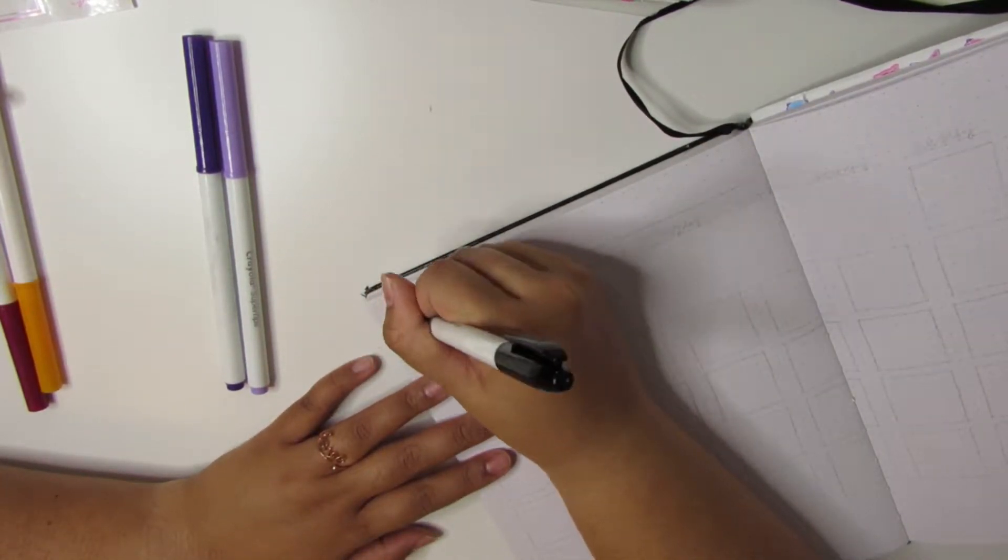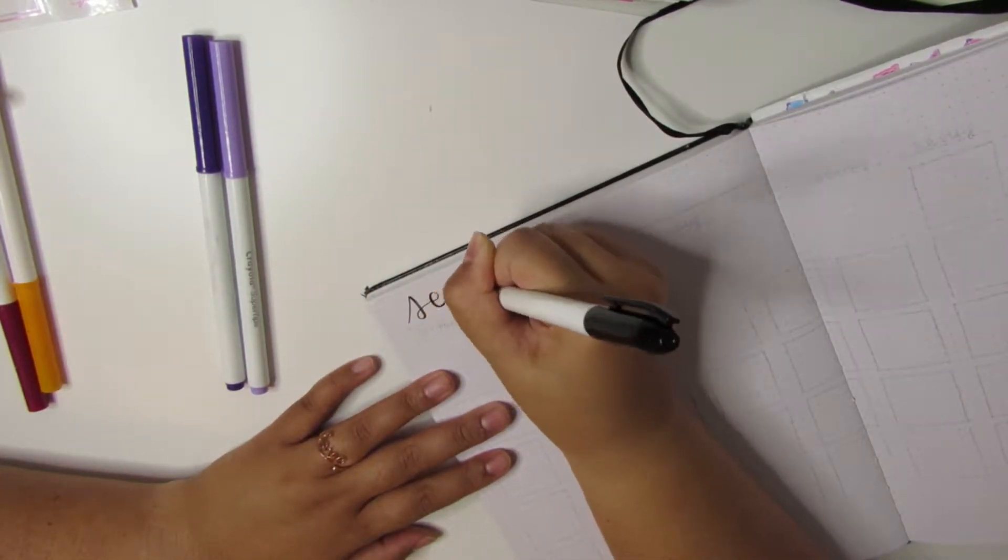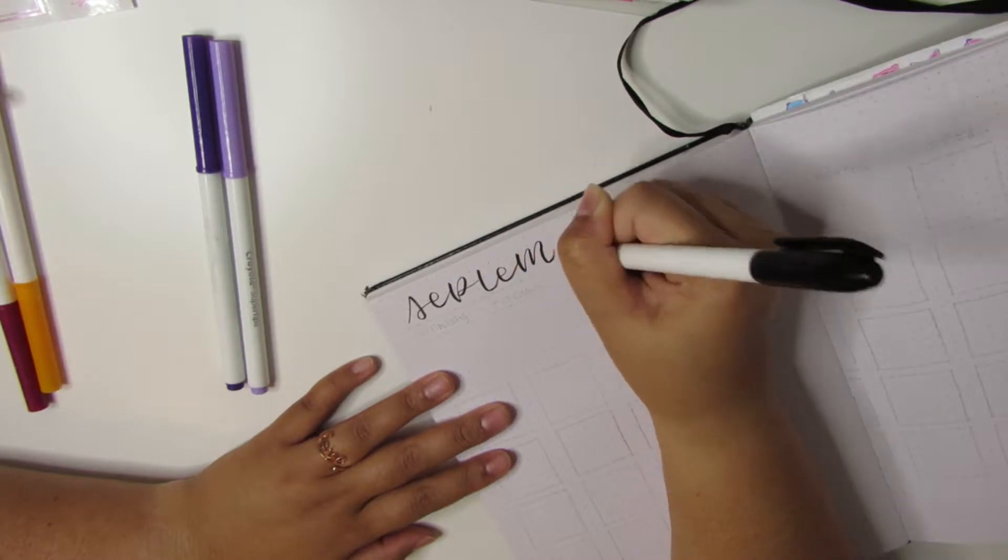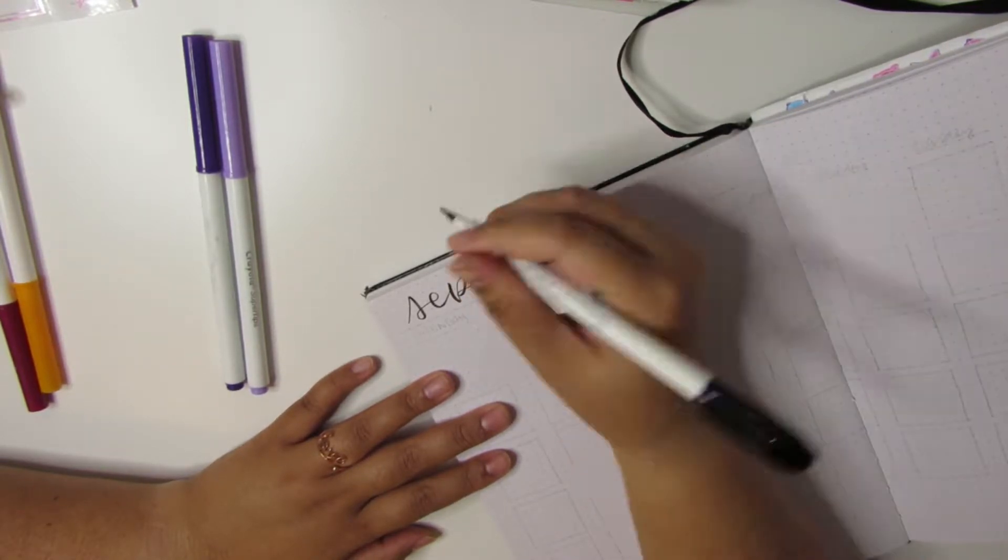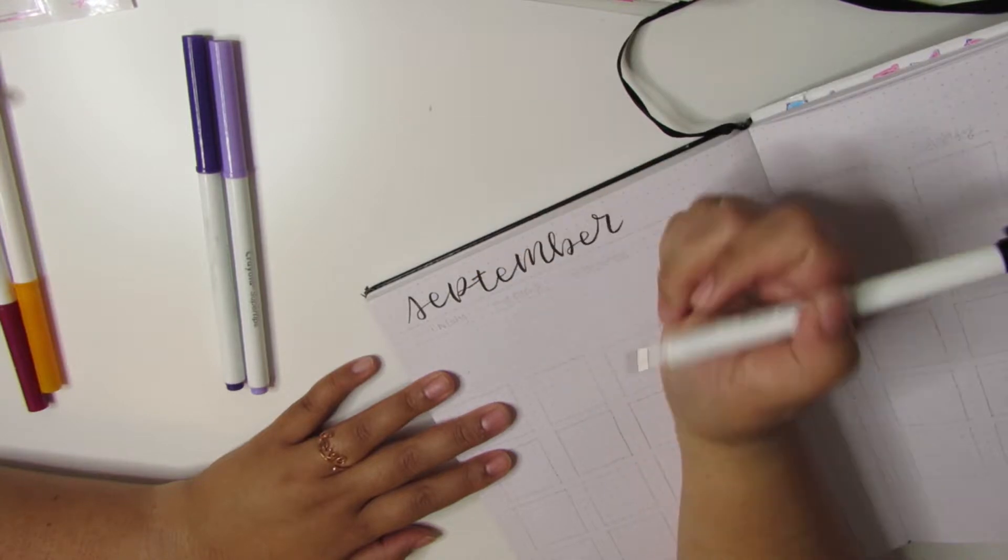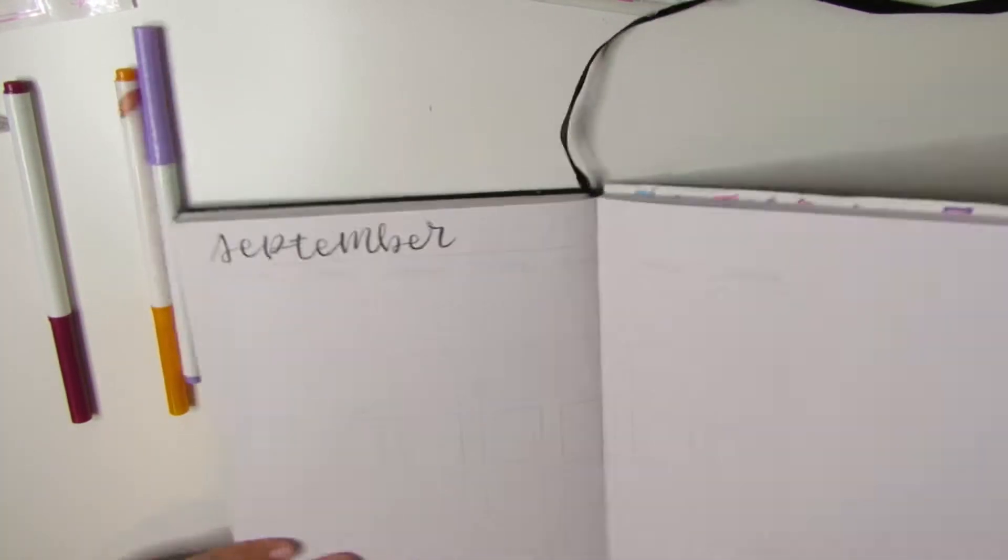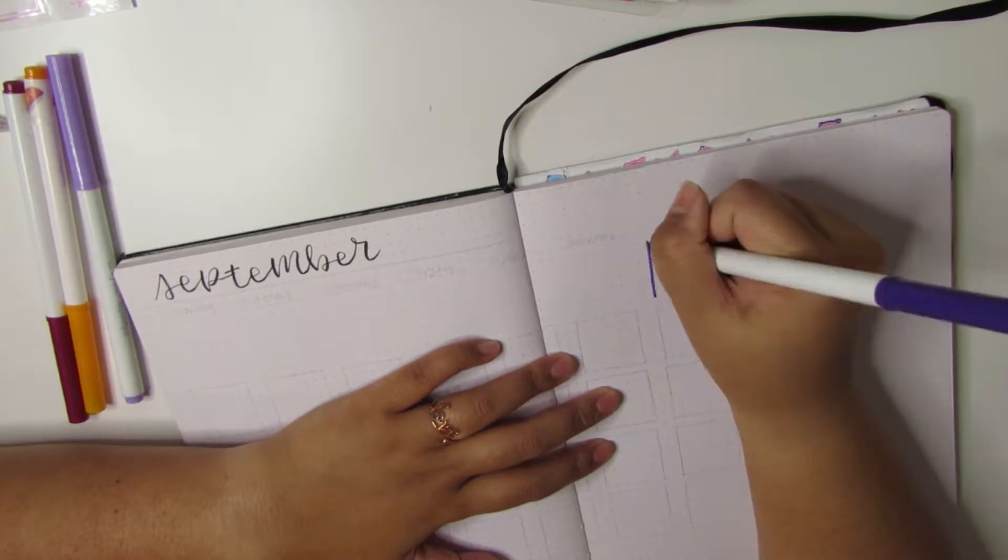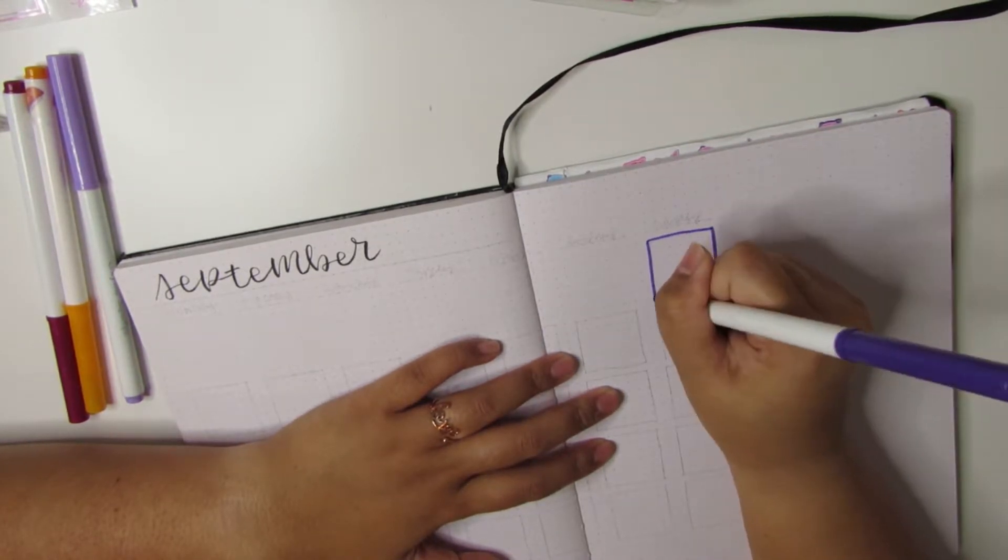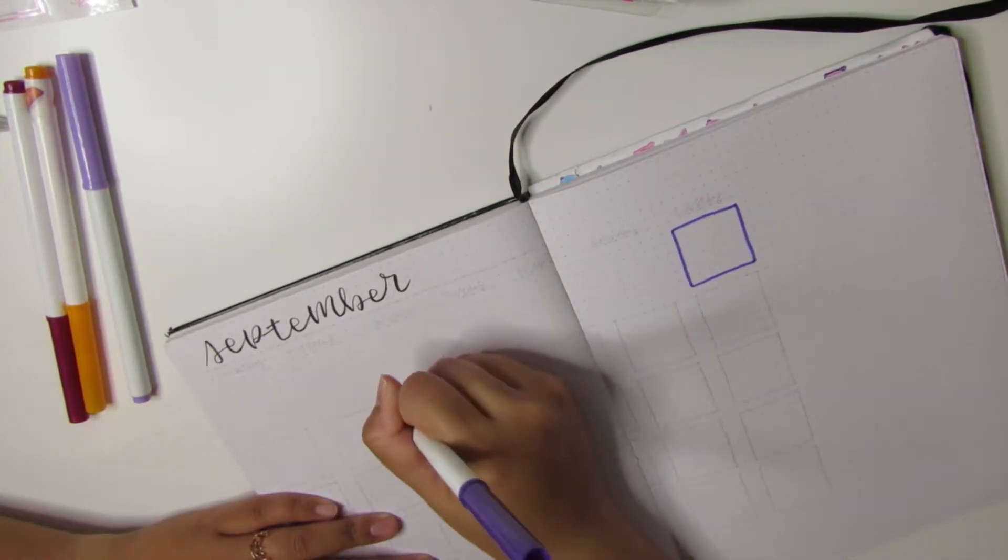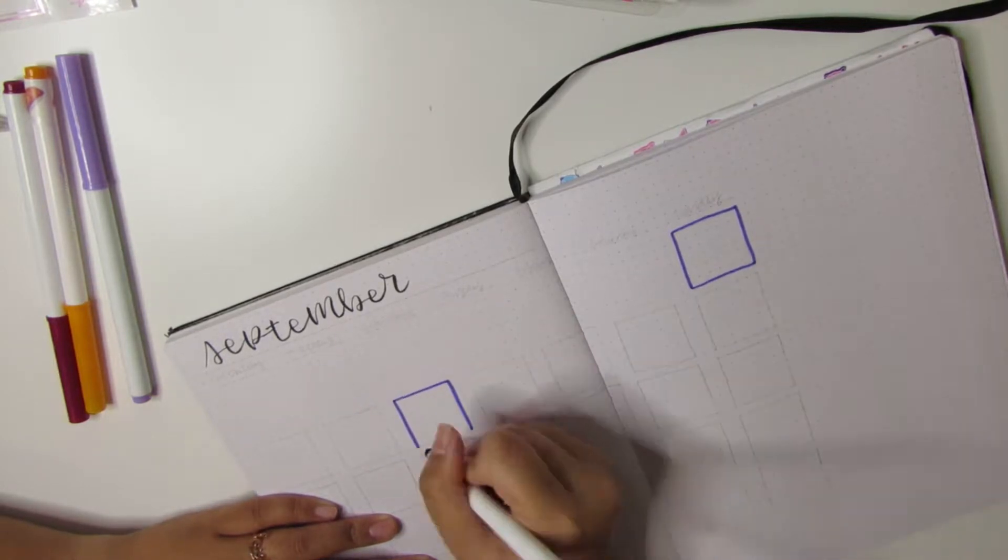Here I'm just lettering in September. It's not the greatest, but to be fair I was filming this with my journal pretty far up my table in order for it to be in the view of the camera.